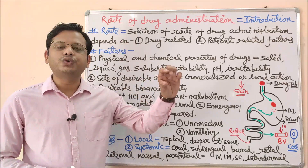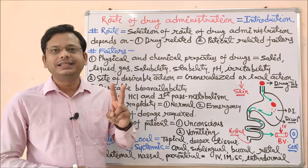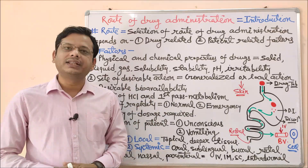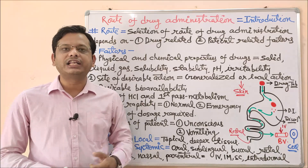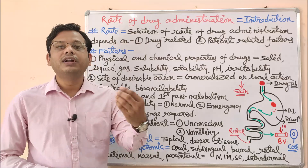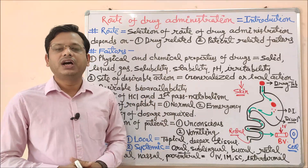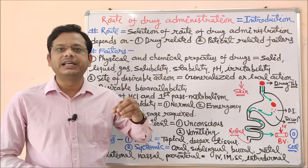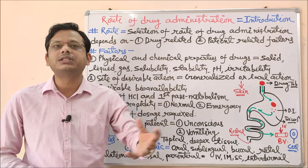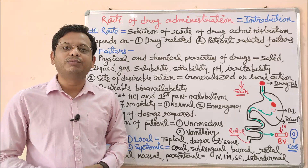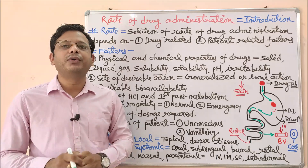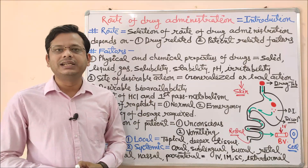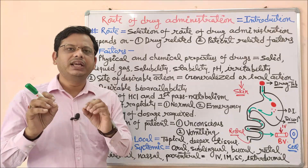First, what is the meaning of 'route of drug administration'? Breaking it down, we have three words: route, drug, and administration. The word 'route' means a path or way by which any drug of interest will reach your blood and lead to systemic circulation so that it may produce its pharmacological effect — which includes both desirable and undesirable effects, since no single drug is 100% safe.